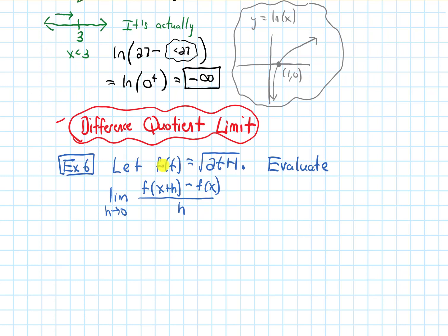So the problem says, let f of t be the square root of 2t plus 1. And I want to evaluate the limit as h approaches 0 of f of x plus h minus f of x all over h.